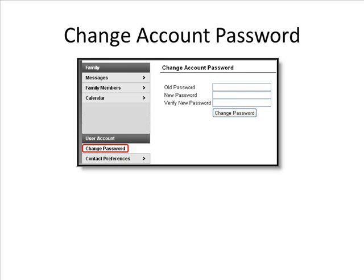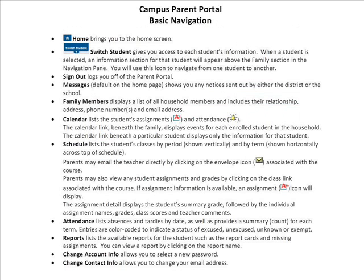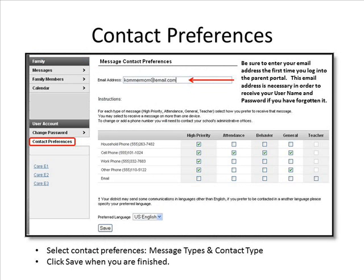Change Account Info allows you to select a new password. Change Contact Info allows you to change your email address. Be sure to enter your email address the first time you log into the Parent Portal, as this email address is necessary to receive your username and password if you have forgotten it. Be sure to click Save after you have done this. You can also select Contact Preferences, such as Message Types and Contact Type.